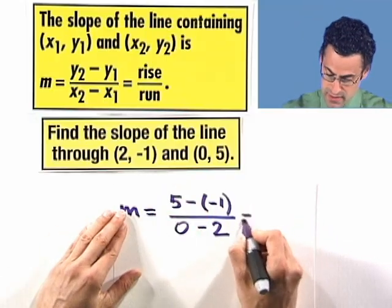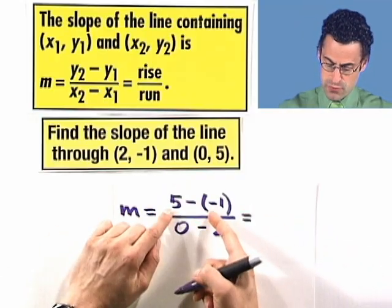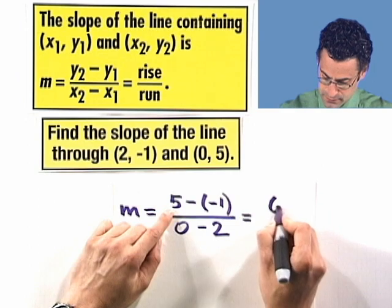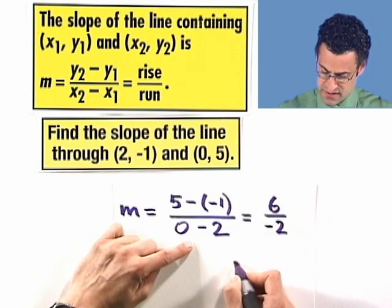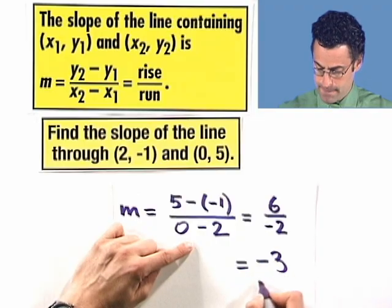All right, enough of that. So I see 5 minus negative 1, so that's 6, divided by negative 2, and so I see that this slope is negative 3. Neat. Let's try another one.